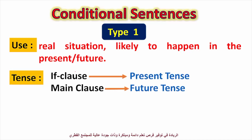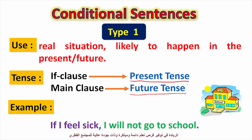In type one, you use it when you speak about a real situation likely to happen in the present or future. In the if clause you use present tense, and in the main clause you use future tense. Example: 'If I feel sick, I will not go to school.' Here 'feel' is present simple in the if clause, and 'will not go' is will plus infinitive in the main clause.